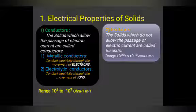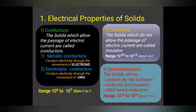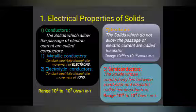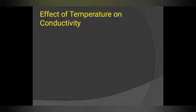The second type is insulators — solids which do not allow the passage of electric current, basically non-metals. Their range is 10^-20 to 10^-10. The third type is semiconductors, which lie between conductors and insulators. Some insulators can be converted to have conductivity. The solid whose conductivity lies between conductor and insulator is called a semiconductor, with range 10^-6 to 10^4.